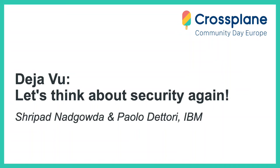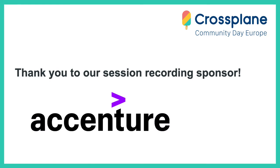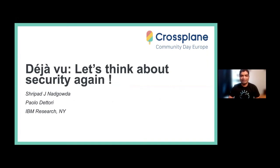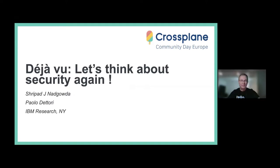Hello everyone, we are really excited to be part of the proceedings. Welcome to our session: 'Deja Vu - Let's Think About Security Again.' My name is Shripa Nargauda, I'm a senior software engineer at IBM Research. My current research focus is on driving innovations around DevSecOps. I'm the chief architect of Code Risk Analyzer, the DevSecOps solution we delivered to IBM Cloud last year.